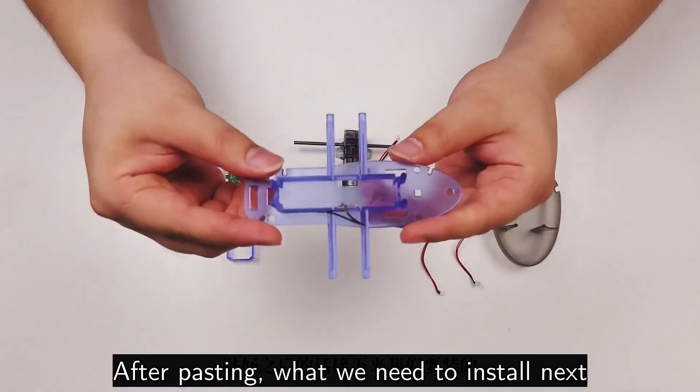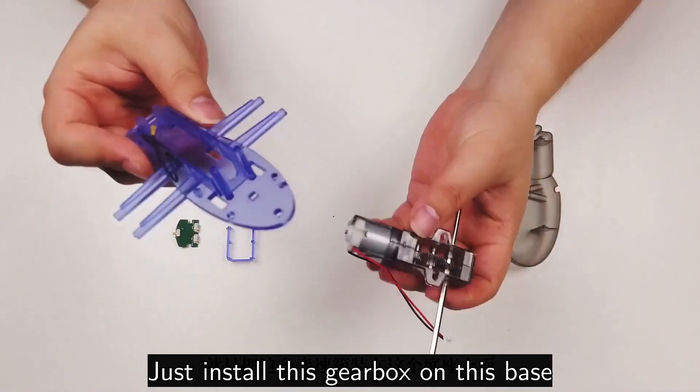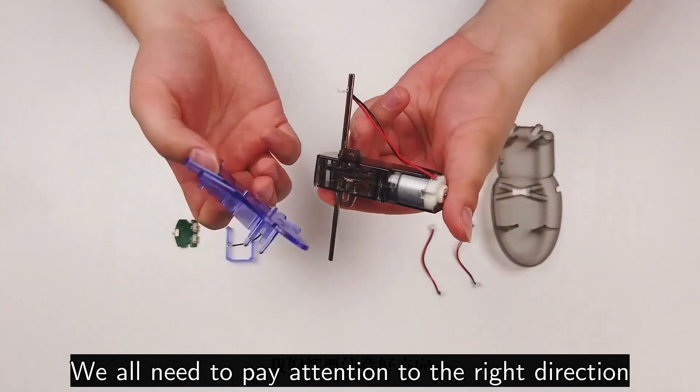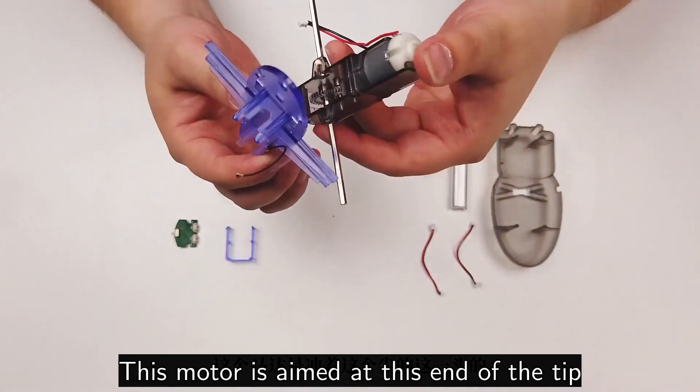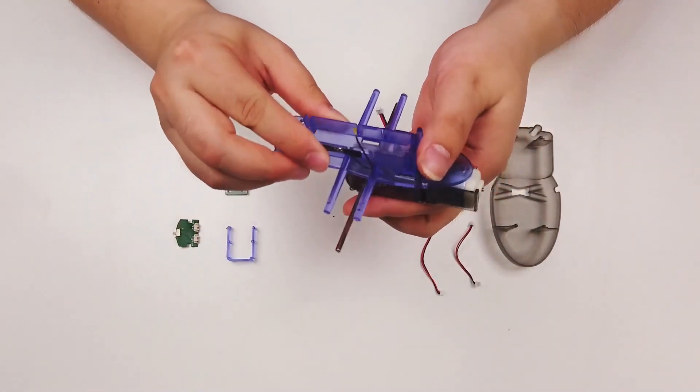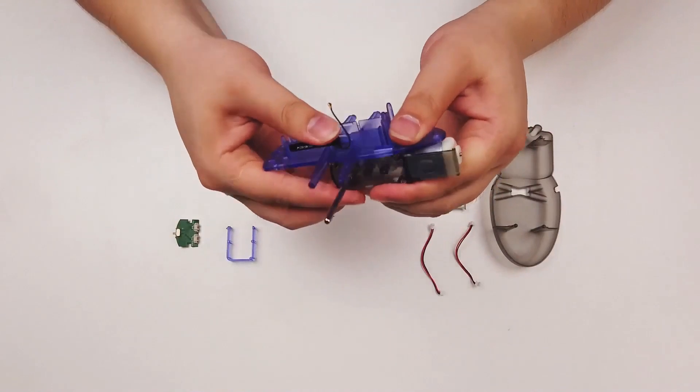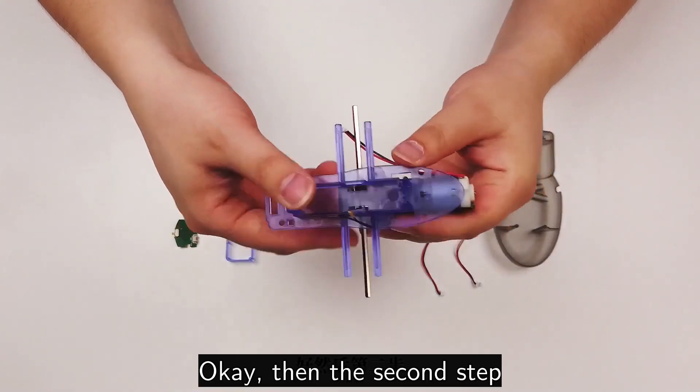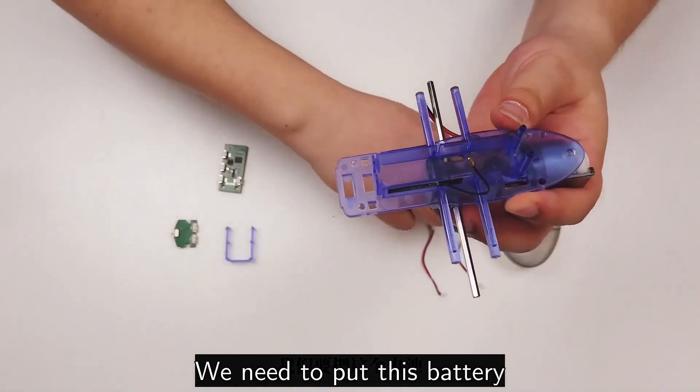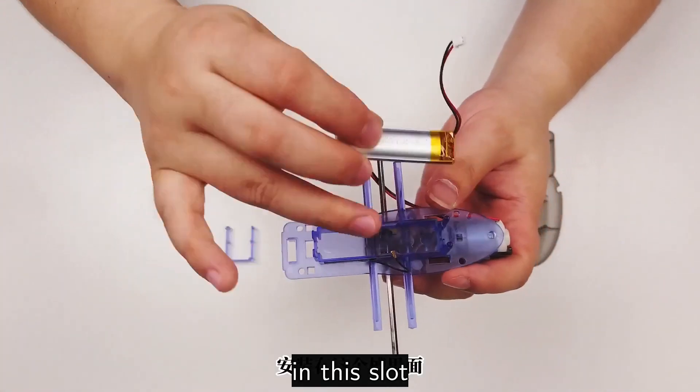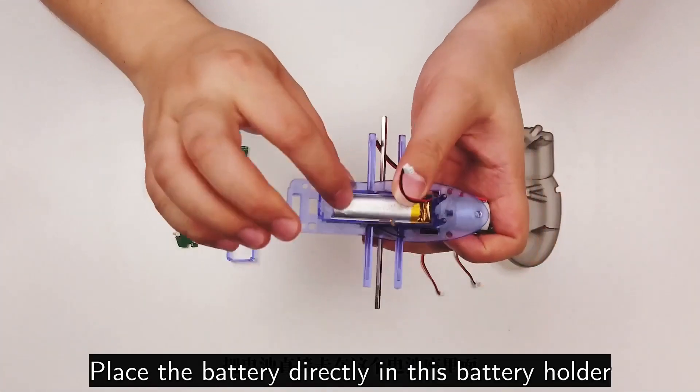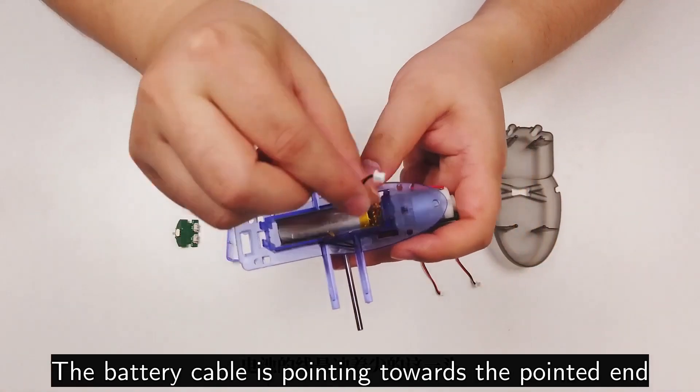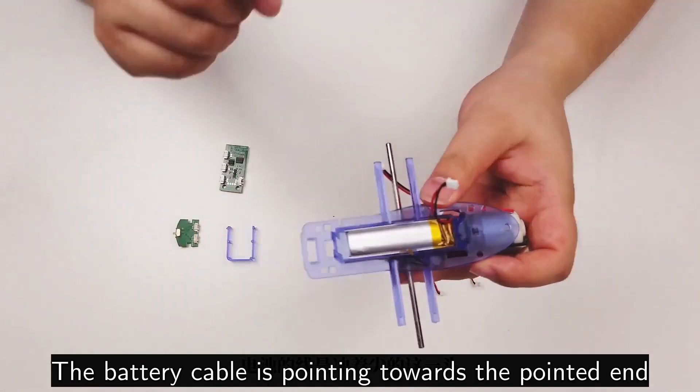After pasting, what we need to install next is this gearbox on this base. We need to pay attention to the right direction. This motor is aimed at this end of the tip. Then the second step, we need to put this battery in this slot. Note this thread end facing upwards. Place the battery directly in this battery holder. The battery cable is pointing towards the pointed end.